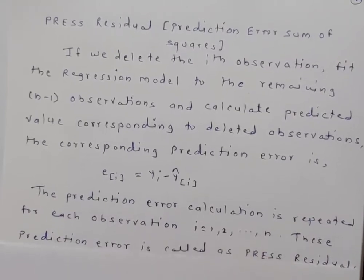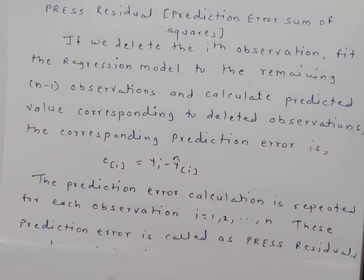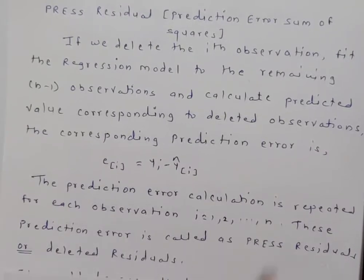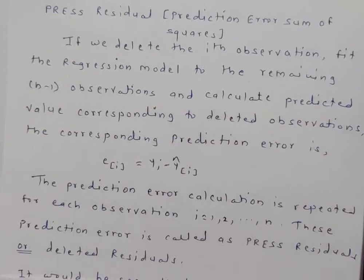We repeat this procedure n times. These prediction errors are called PRESS residuals or deleted residuals, since we delete each observation in turn. PRESS stands for Prediction Error Sum of Squares.